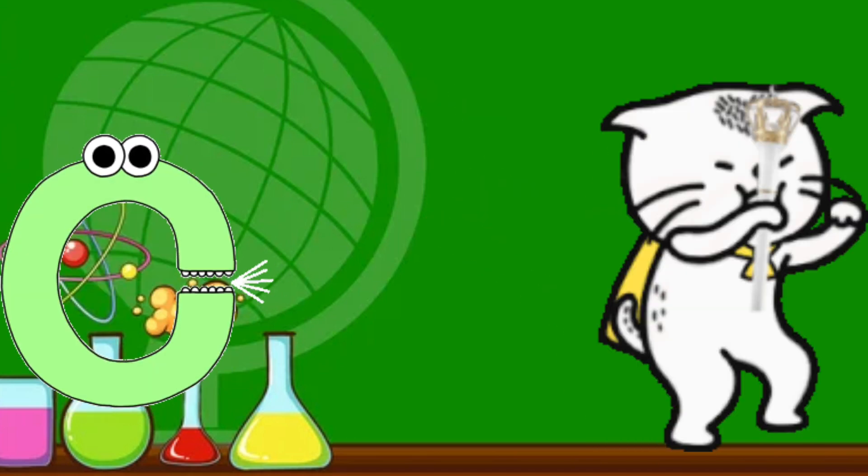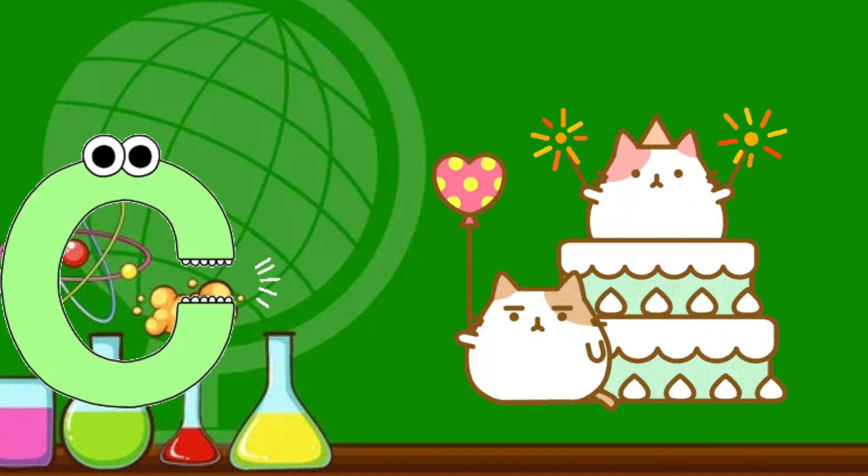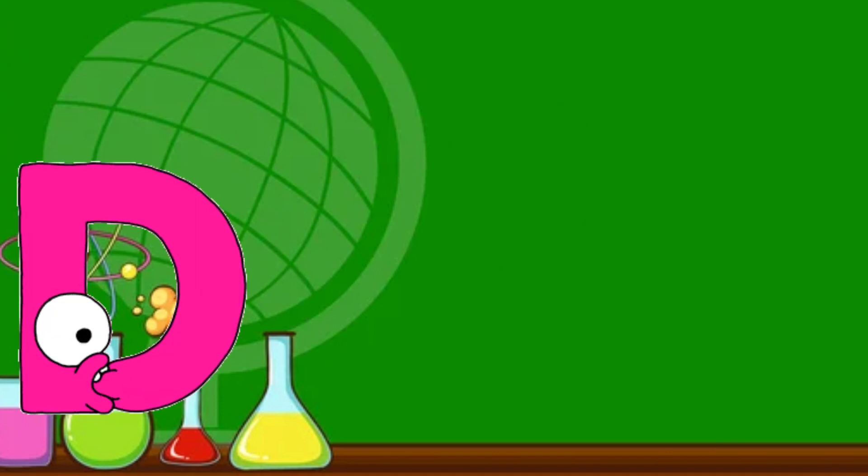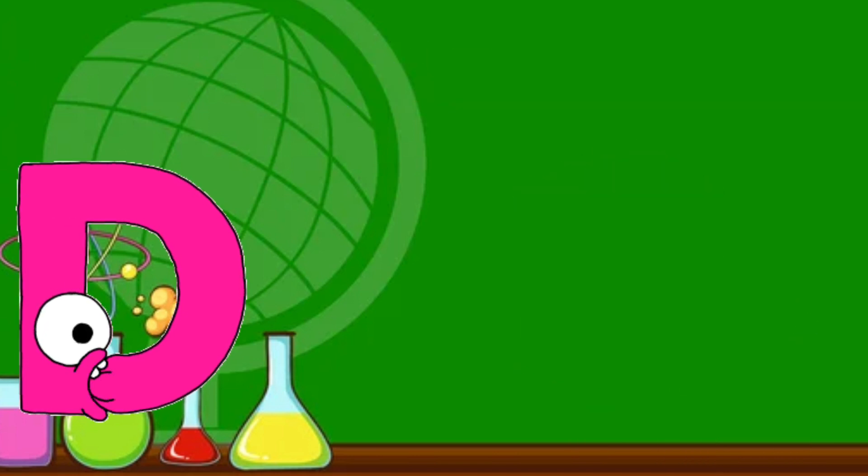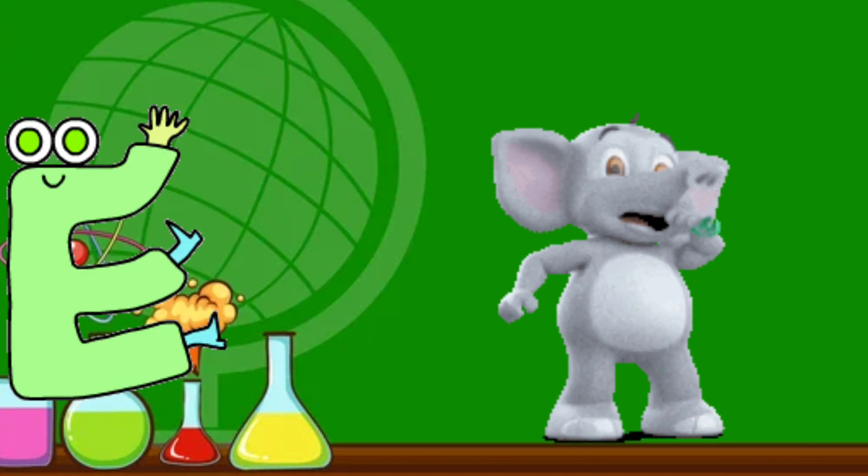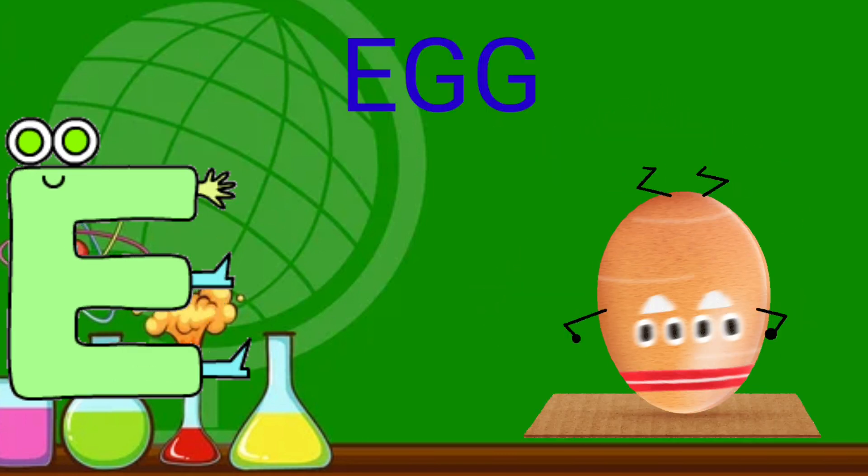C. C for cat. C for cake. D. D for dog. D for dice. E. E for elephant. E for egg.